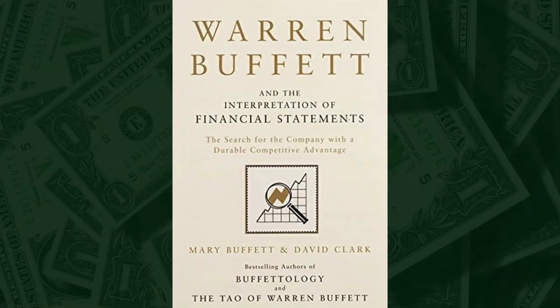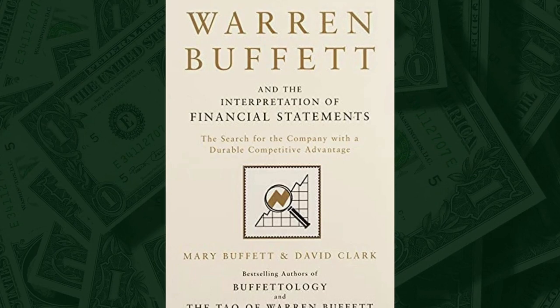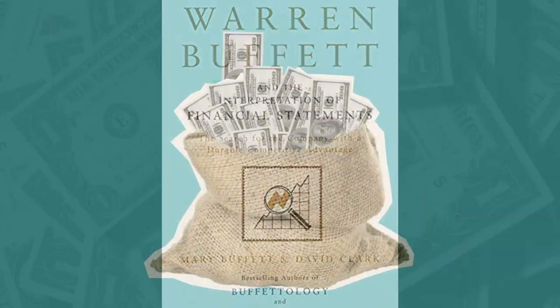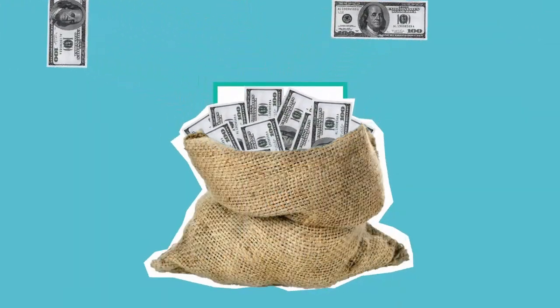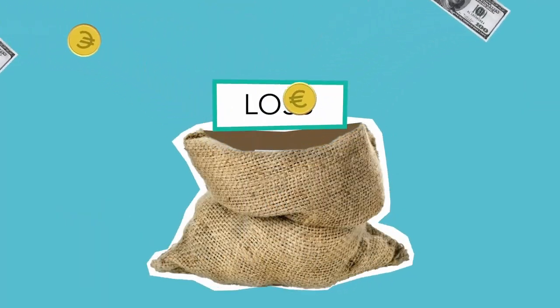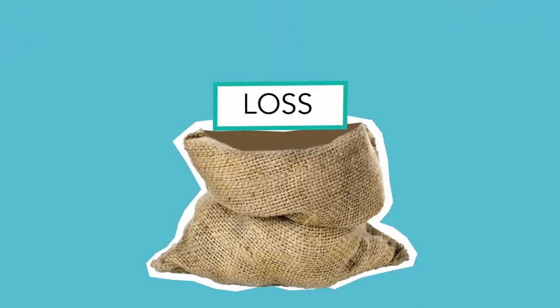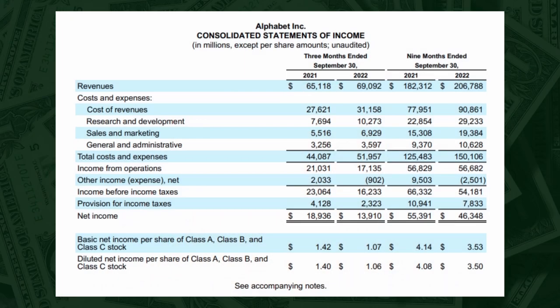In the book, it actually goes by income statement first, and then balance sheet. But balance sheet is incredibly important for downside protection, and I am making this video series for mostly the beginners. So I have put balance sheet as the first part to highlight the importance of downside protection.